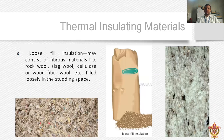The next type is loose fill insulation — you can see it on the center image. We also use this material for thermal insulation in buildings. It consists of fibrous materials like rock wool, slag wool, and wood fiber.